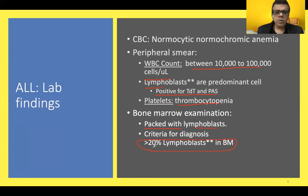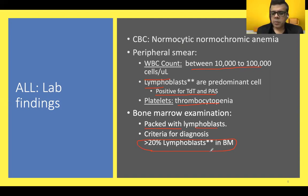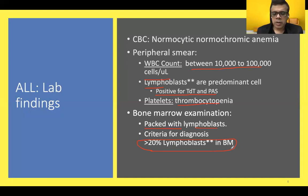Regarding terminology: if more than 20% lymphoblasts are present in both bone marrow and peripheral blood, it is called leukemic leukemia. If more than 20% are in bone marrow but fewer than 20% in peripheral blood, it is sub-leukemic leukemia. If more than 20% blasts are in bone marrow but peripheral blood is devoid of blast cells, it is called aleukemic leukemia. This terminology is based on lymphoblast presence in peripheral blood.